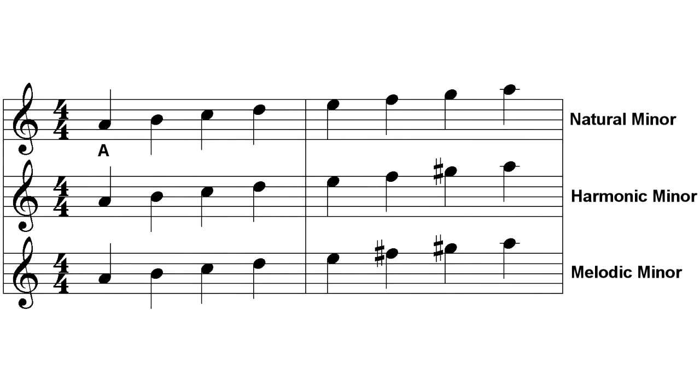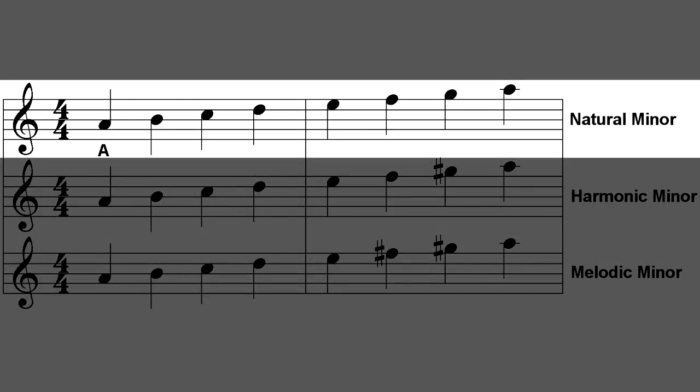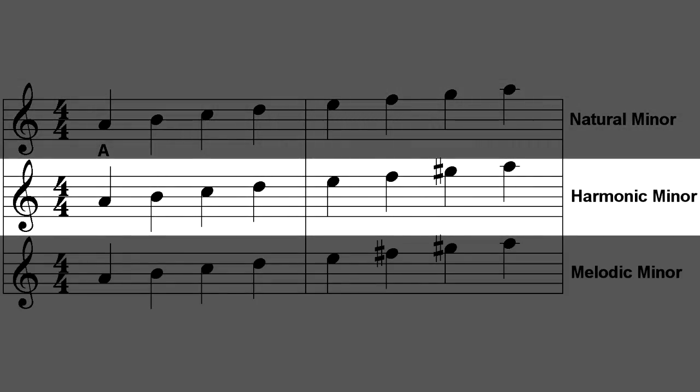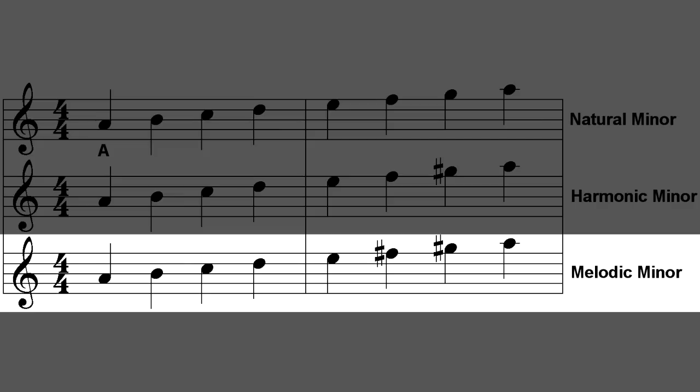There are three variations of the minor scale. The natural minor scale at top contains the notes that naturally belong to the key. The key of A minor has no sharps or flats, so this scale plays the white key notes starting with A. The harmonic minor scale in the middle is similar but raises a seventh by a half step and sounds like this. The melodic minor scale at the bottom raises both the sixth and seventh scale tones. This keeps the first half of the scale minor but makes the second half more like a major scale. Here's what that sounds like.